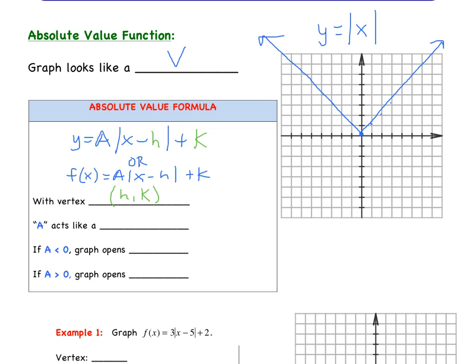Looking at what's inside the absolute value, the value of X that makes the inside equal to zero is your H value — it's the opposite of what the sign shows. Our A value acts like a slope. If A is less than 0, the graph opens downward; if A is greater than 0, the graph opens upward.